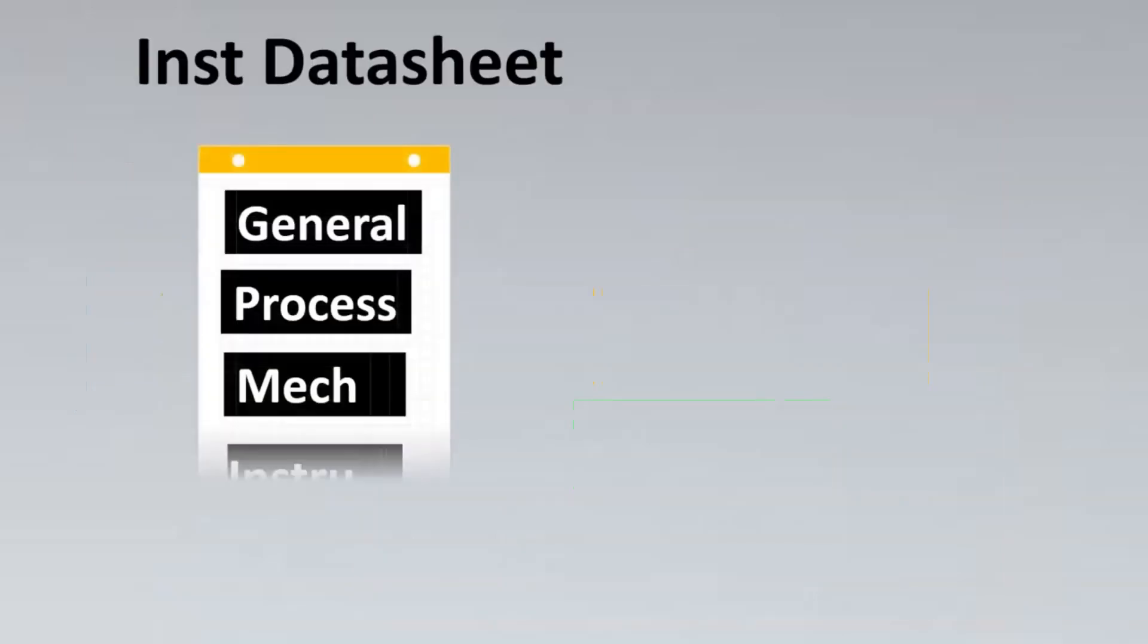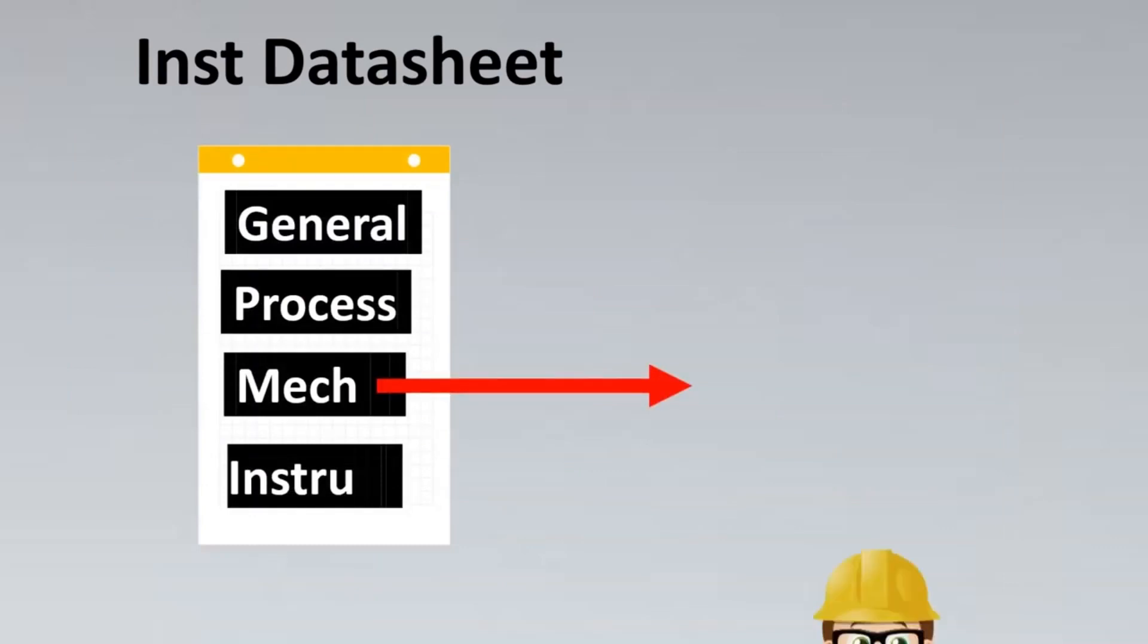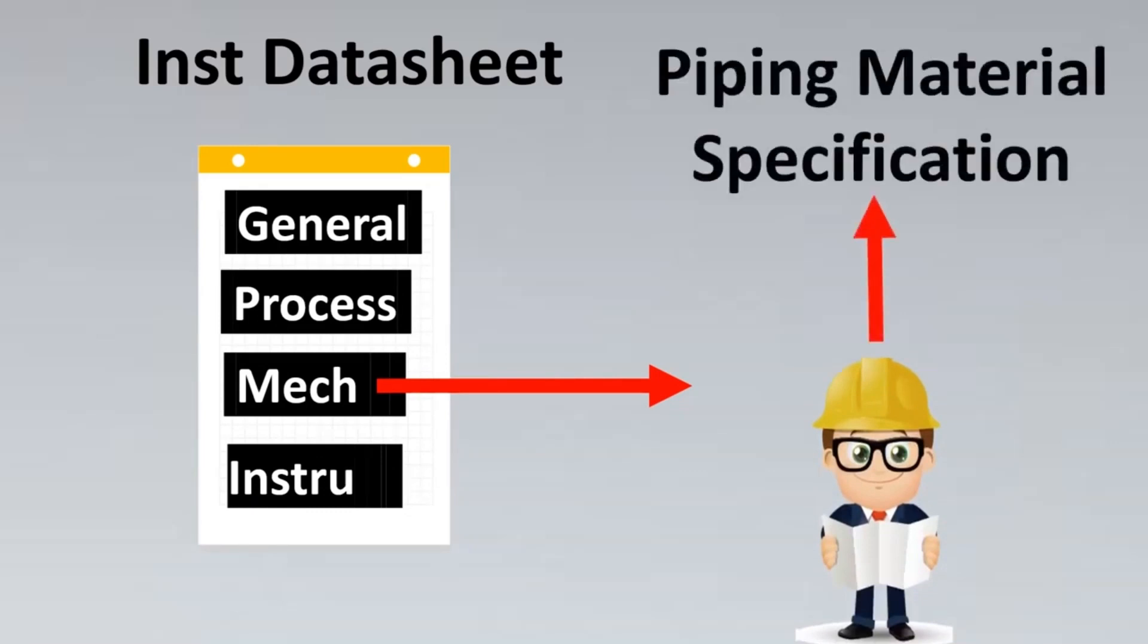Now we look into the next section, which is the mechanical section. This is a very interesting and important section where we get a document called piping material specification that we'll have to use. A lot of people have this question: why is it so important and how do instrument engineers usually select their material?